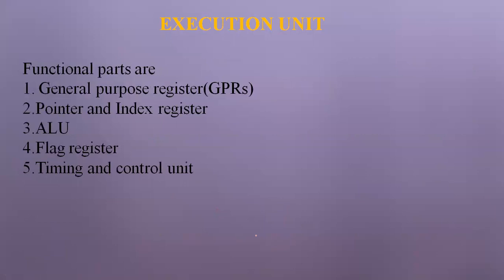The Execution Unit is divided into five parts: four general purpose registers (AX, BX, CX, DX), pointer and index registers (stack pointer, base pointer, source index, destination index), the Arithmetic and Logical Unit, the flag register, and the timing and control unit.